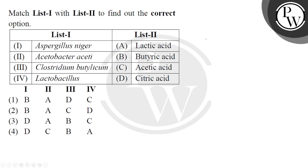Hello students, let's read the question: match list 1 with list 2 to find out the correct option. In list 1, we have given the names of living organisms, and list 2 has the products produced by them, and we have to match them correctly.